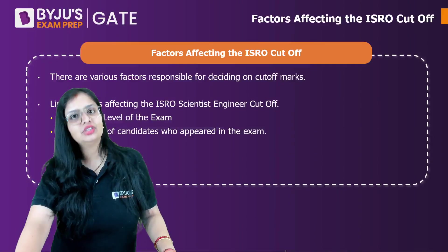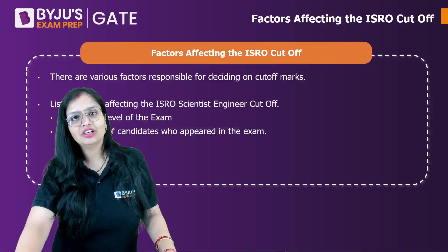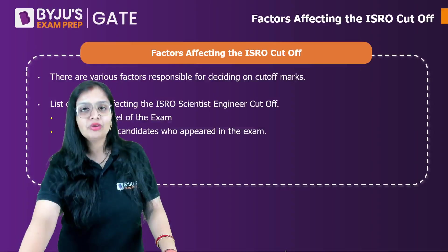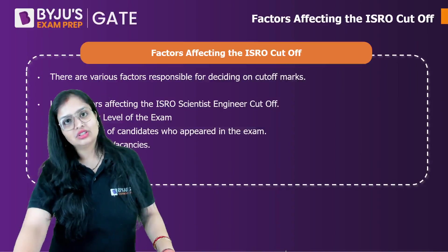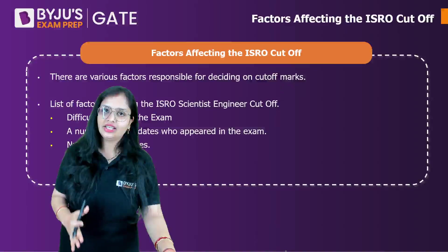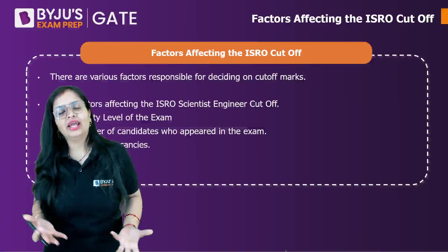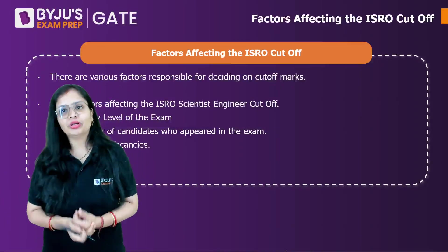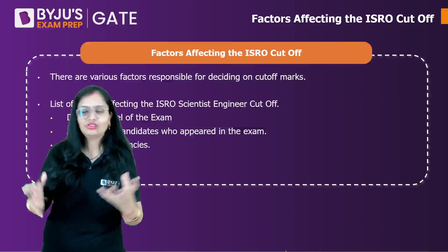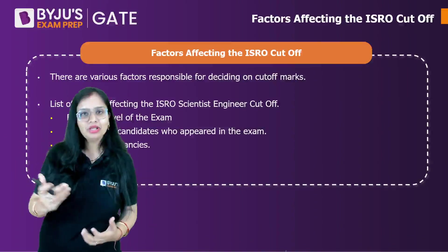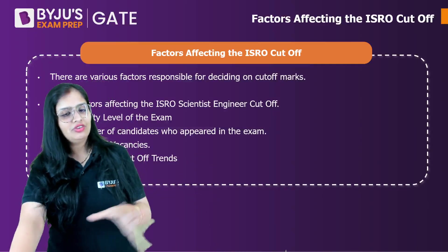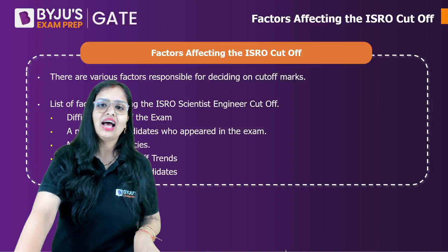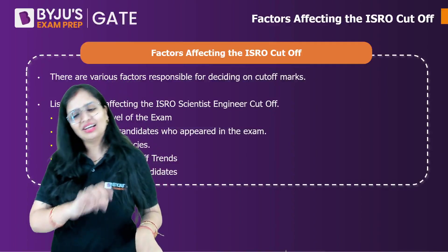The second factor is the number of candidates who appeared for the examination — more registrations can push the cutoff up. Third is the number of vacancies: if fewer vacancies are available and more people are applying, the cutoff marks will be higher because only the top candidates get shortlisted. Previous year cutoff trends and the average score of candidates also play a role.